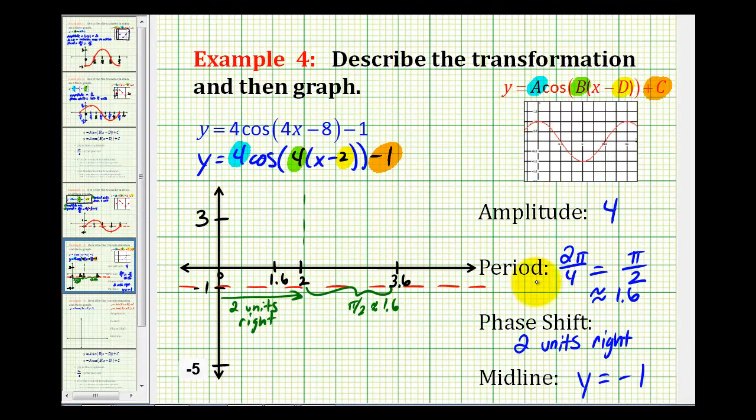So now we'll graph one period of our function from 2 to 3.6, so let's go ahead and divide this into four equal parts. The middle of 2 to 3.6 would be 2.8. This would be 2.4, and this would be 3.2. And now we'll use what we know about the cosine function to graph the given function on this interval.